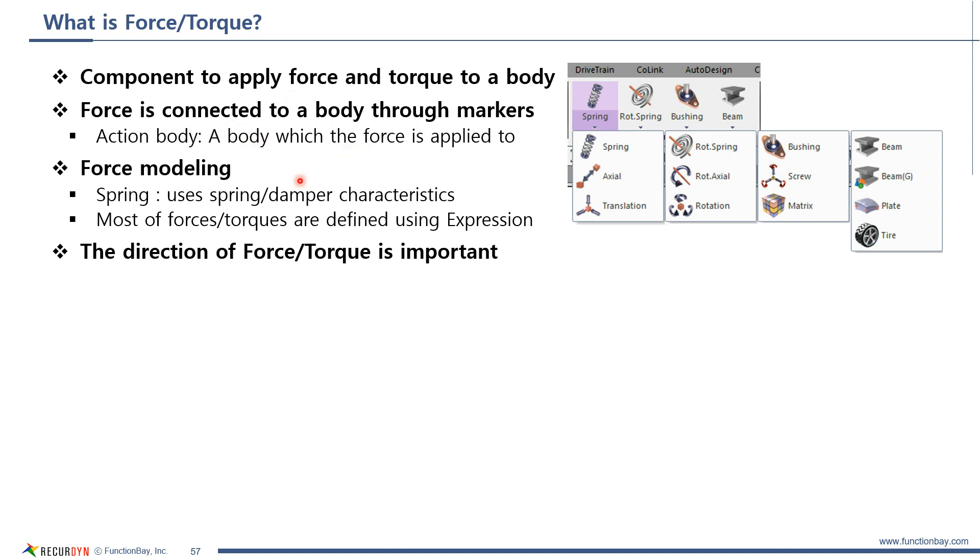Spring force parameters are the characteristics of spring and damper. But, most of the other forces are defined using expression. For example, axial force, translational force, rotational axial force, or rotational force, use expression. Also, please note that the direction of force and torque is very important.